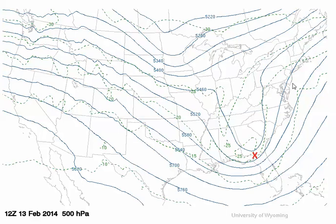When you have strong upper-level divergence that is stronger than the low-level convergence around the low, the weight of air columns is reduced and you get a strengthening low. So the fact that the trough is west of the surface low is the common regime you see when a surface low is still strengthening.